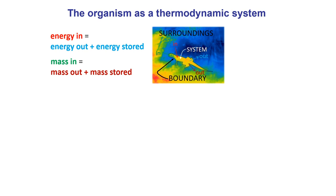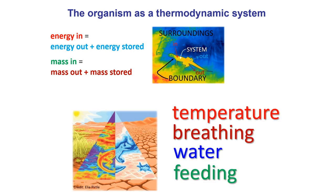How energy in the form of heat and chemical energy, and how mass in the form of building blocks, is going in and out of the organismal system is absolutely fundamental to the process of that organism growing, developing, surviving, reproducing, and therefore persisting. So we can think of thermodynamic processes as the fundamental requirements for life: being at the right temperature, respiring, breathing, having enough water, and having enough food — picking up chemical substrates from the environment and using them to run the metabolism and grow the organism.